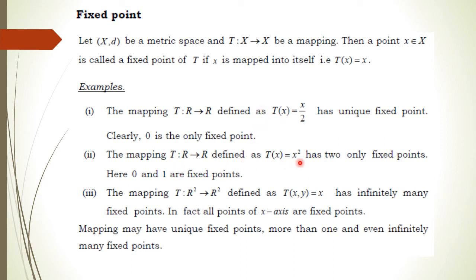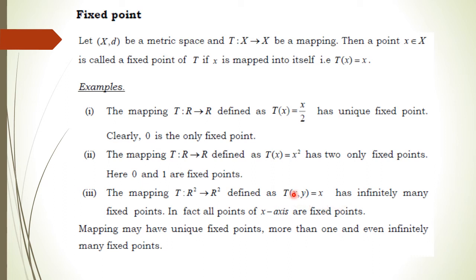Similarly, if we consider T(x) = x², we find those points where T(x) = x. When we put x = 0 we get T(0) = 0, and when we put x = 1 we get T(1) = 1. So there are two fixed points: 0 and 1. Furthermore, if we consider T as a mapping from R² to R² defined by T(x, y) = x, then this mapping has infinitely many fixed points — all points lying on the x-axis are fixed points.